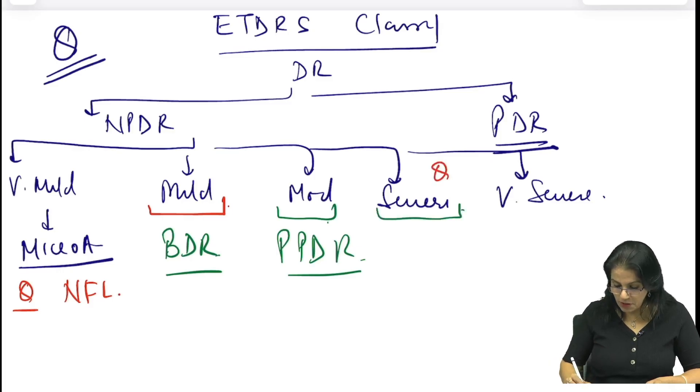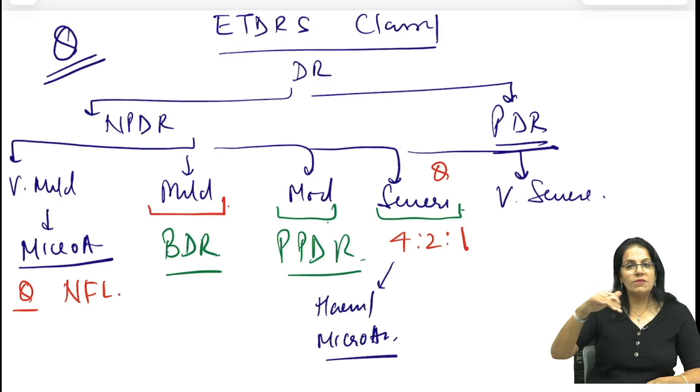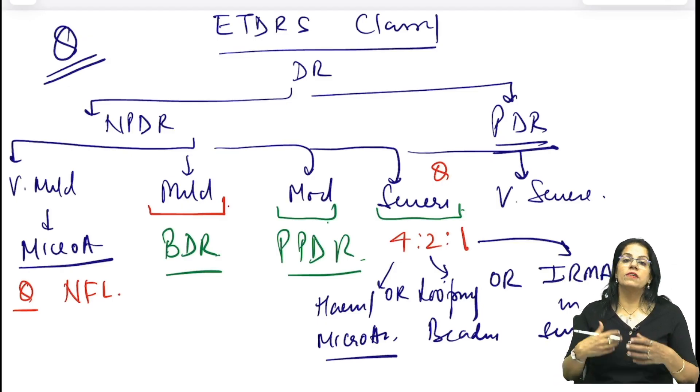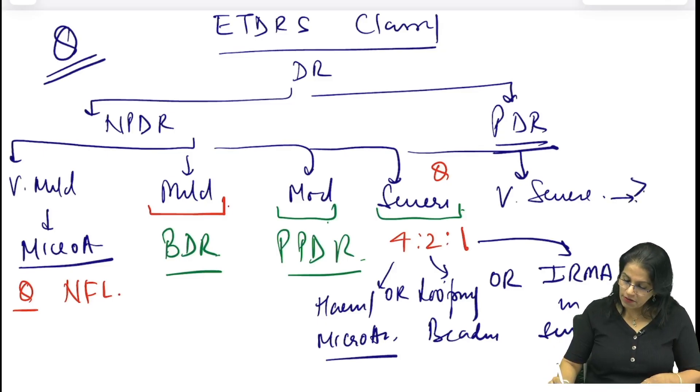Ab padhte hai severe kya hota hai. Ye exam question hai, is pe bhi puchha gaya hai. 4 is to 2 is to 1 rule. Kya hai 4 is to 2 is to 1 rule? Ya to hemorrhage ya microaneurysm all 4 quadrant me mile. Pure fundus ko 4 quadrants me divide kar do. So either all 4 quadrant me yeh mile, ya aur iske alawa ya to looping or beading jo hai wo 2 quadrant me mil rahi hai, nahi to yeh sab aur hai okay, nahi to IRMA ek single quadrant me mil raha hai. Yeh hota hai aapka severe. Aur very severe kya hai? More than one criteria of severe is very severe. Yeh ho gaya aapka aur PDR bas yaad rakhiye jab neovascularization.